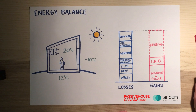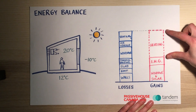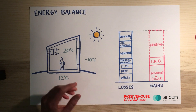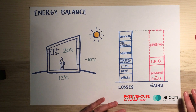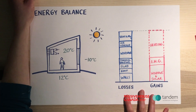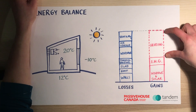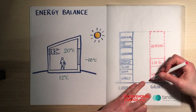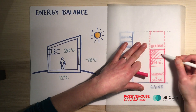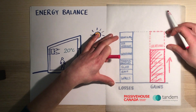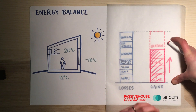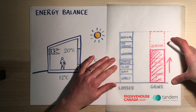So if we want to make a really efficient building, we're going to try to shrink down the portion attributed to the heating system as much as possible. Two big strategies: we can increase the passive gains — mostly solar gains — to shrink the portion attributed to the heating system. We do need to be careful, however, because we don't want to end up in an overheating scenario in the summertime.